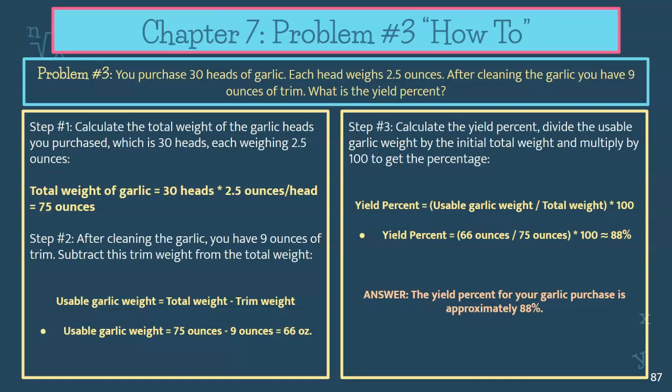After cleaning, you have nine ounces of trim total. Note that this is slightly different from the previous problem: in the star fruit problem the trim was per fruit, but here it's the total ounces of all the trim combined. Read the problem carefully and ask for clarification if you get confused. So you take your usable garlic: 75 ounces minus the nine ounces of trim, and you get 66 ounces of total edible garlic.